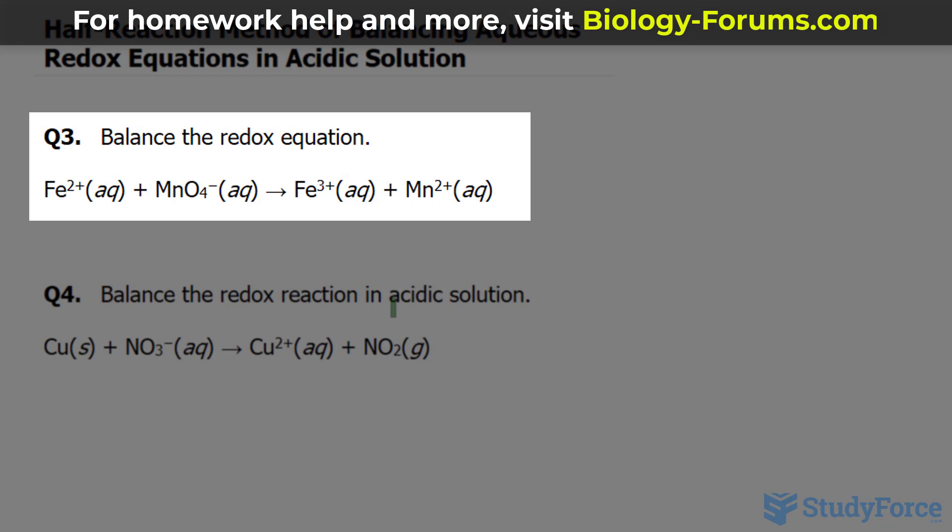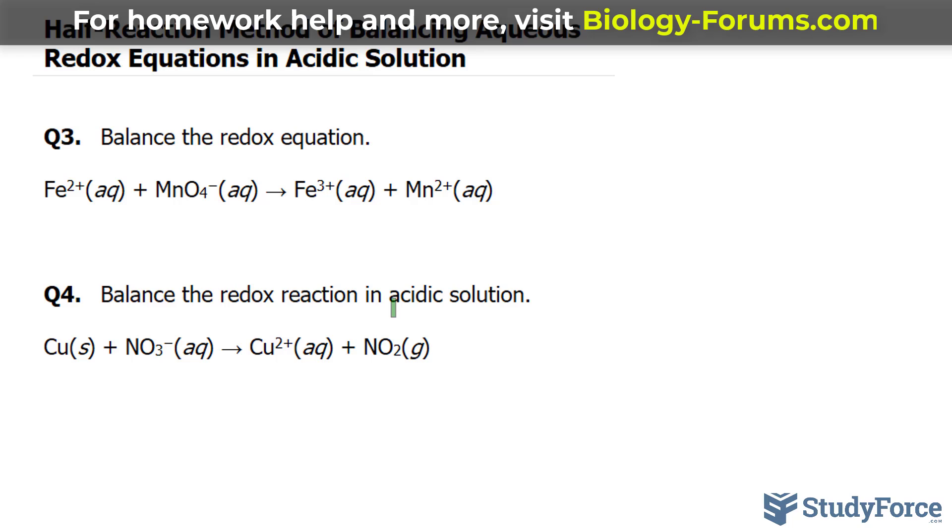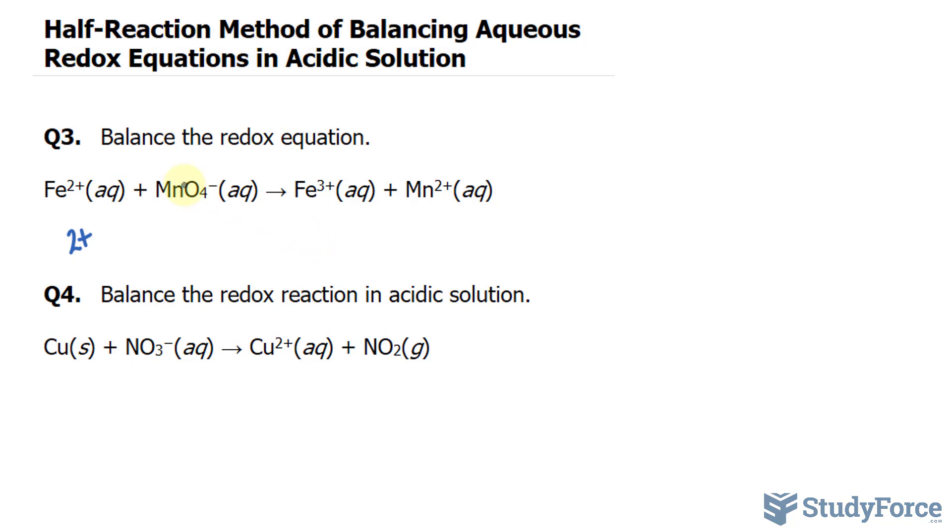The first step to balancing this is to write down the oxidation states for each of these ions. Starting with Fe2+, the oxidation state here is 2+. We'll skip this for a moment, the oxidation state here is 3+. This one is easy, you can identify it by its superscript 2+. The reason why I skipped this is because we need to do a little bit of math.